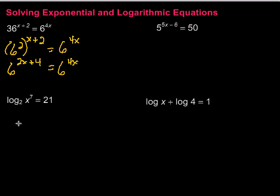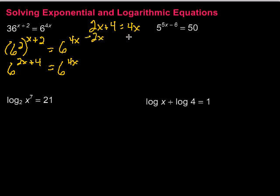Now we have the same base, so I can set those exponents equal to each other. We'll have 2x plus 4 equals 4x. We want to get the x's by themselves, so let's get them all together. Subtract 2x, and we have 4 equals 2x. Finally, divide by 2 on both sides, and we're left with x equals 2.